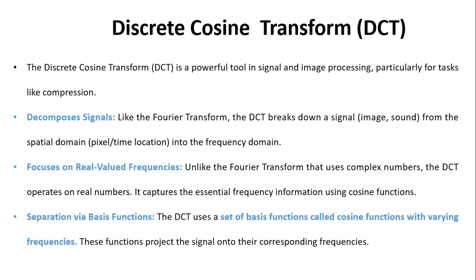Like the Fourier transform, the DCT breaks down a signal — whether in image or sound form — from the spatial domain to the frequency domain. It focuses on real-valued frequencies; unlike the Fourier transform that uses complex numbers, the DCT operates on real numbers. It captures essential frequency information using cosine functions. DCT uses a set of basis functions called cosine functions with varying frequencies, which project the signal onto their corresponding frequencies, dividing the input image or sound into a frequency spectrum.